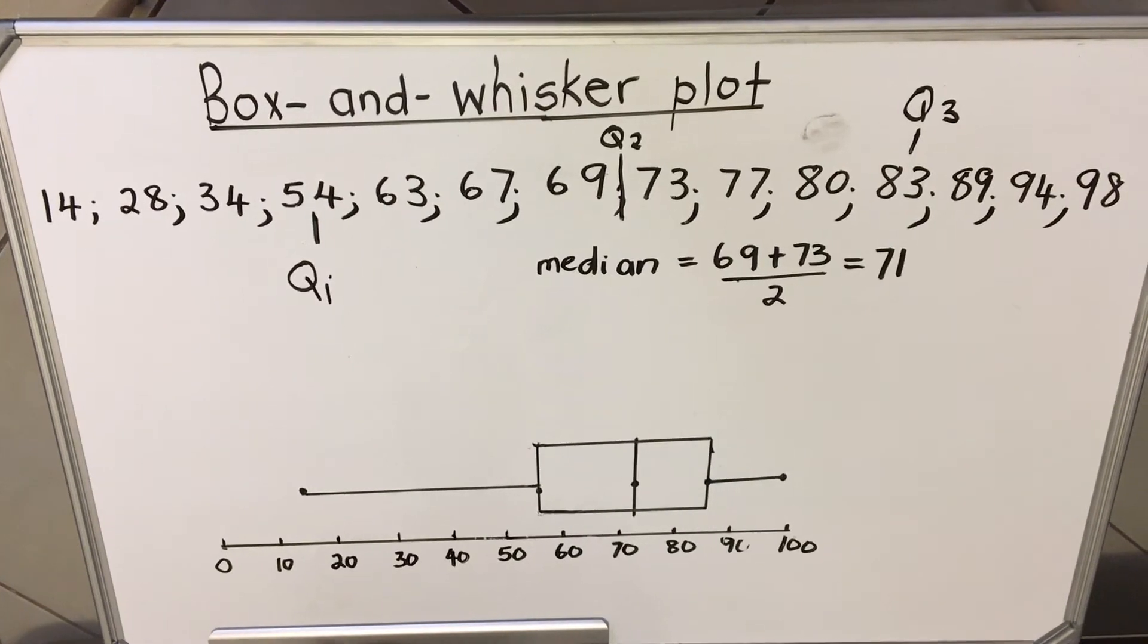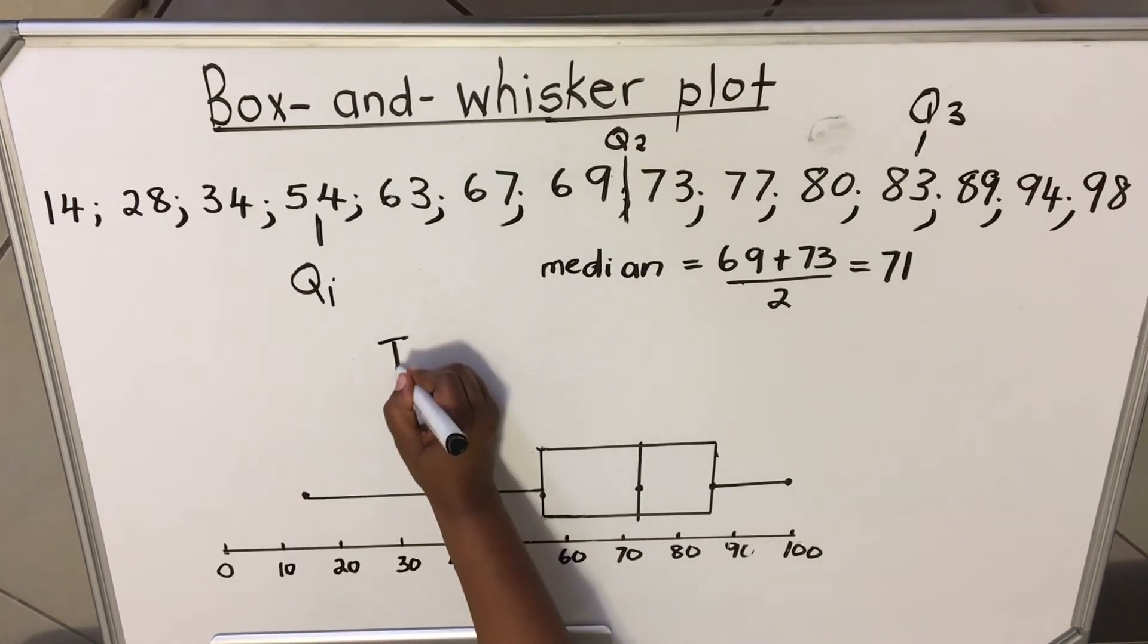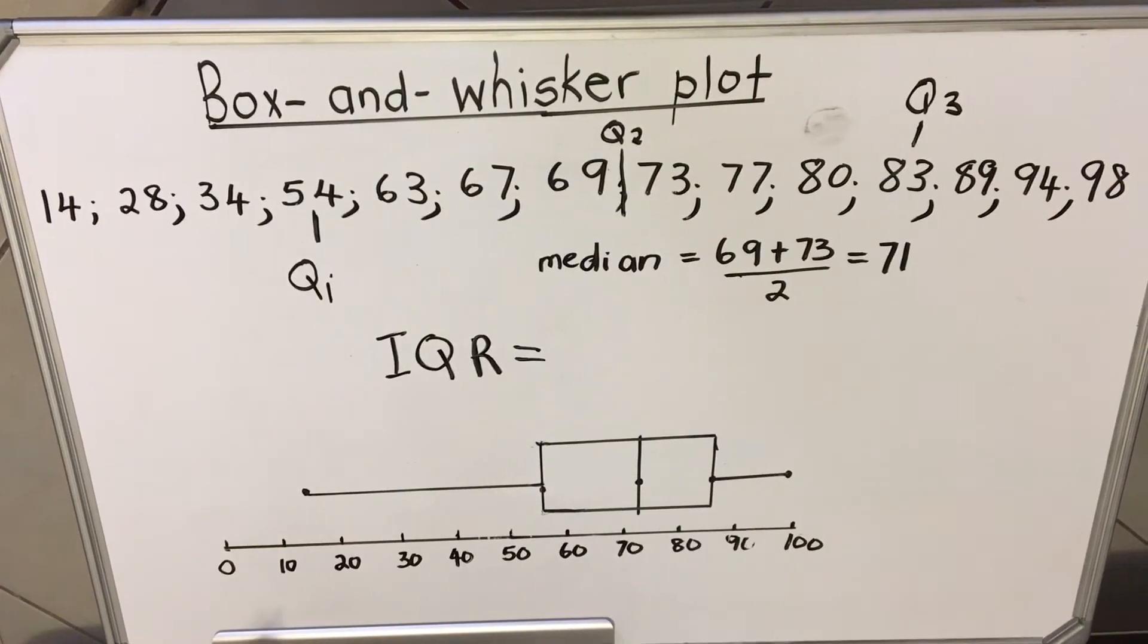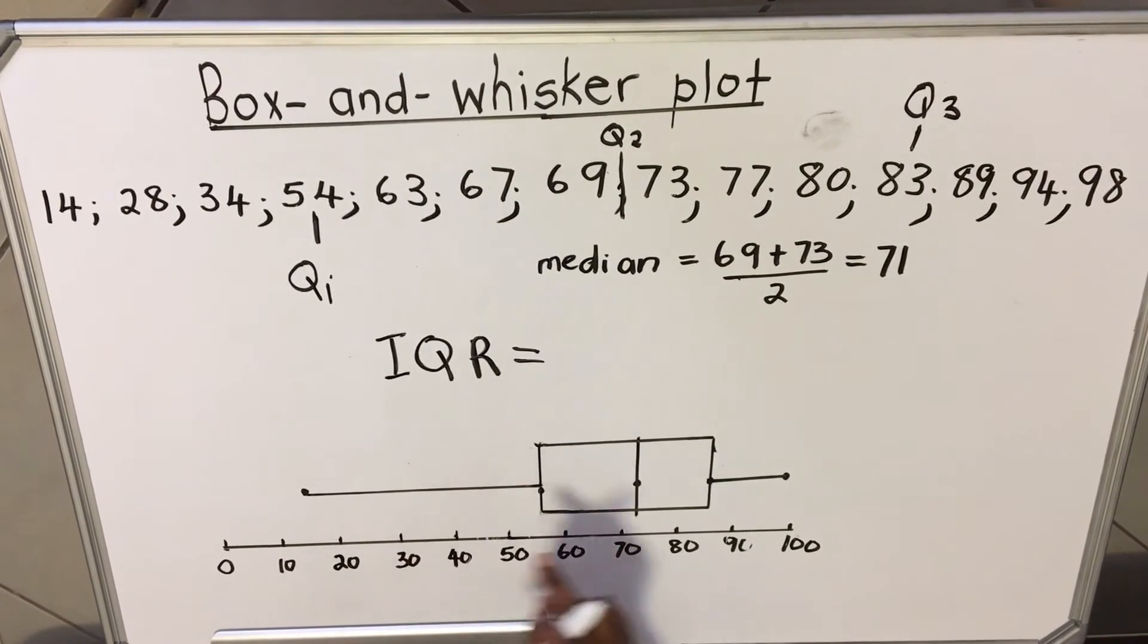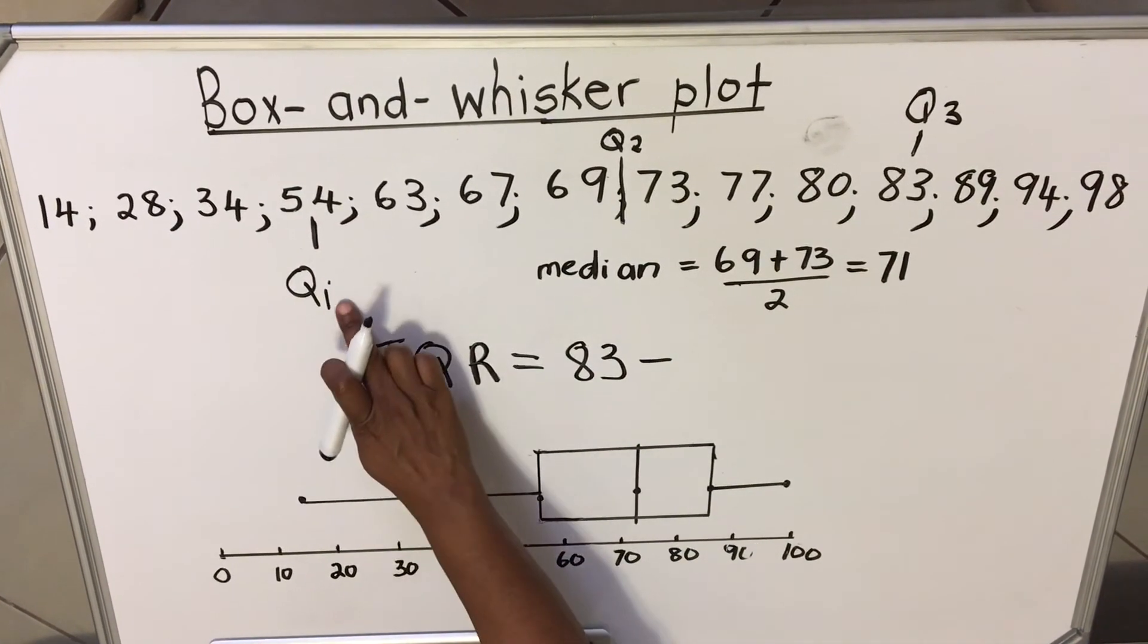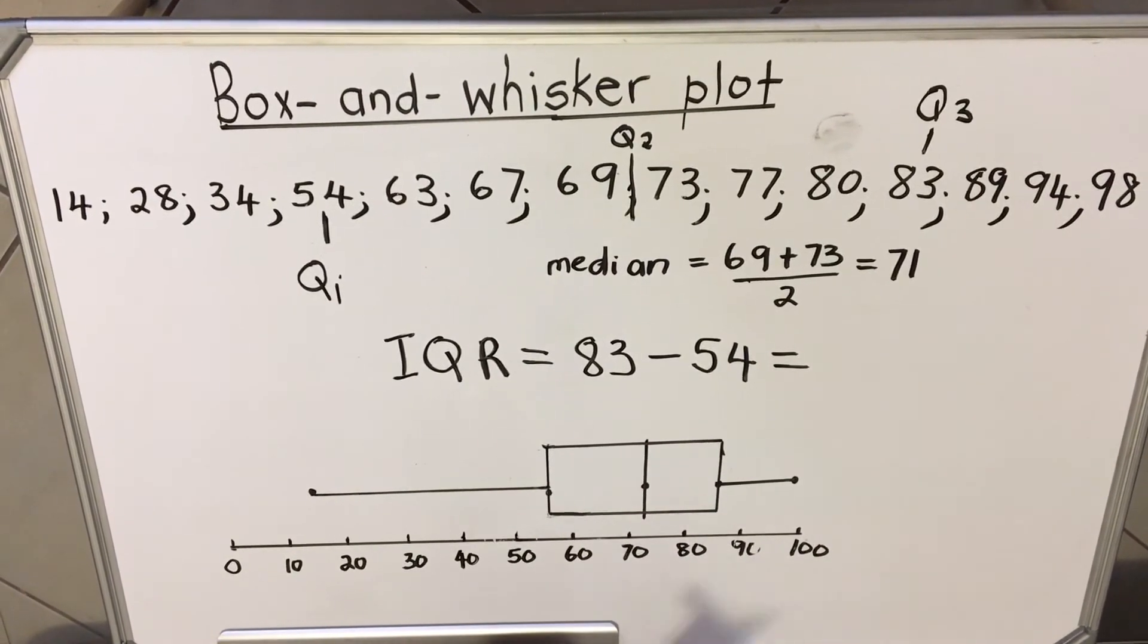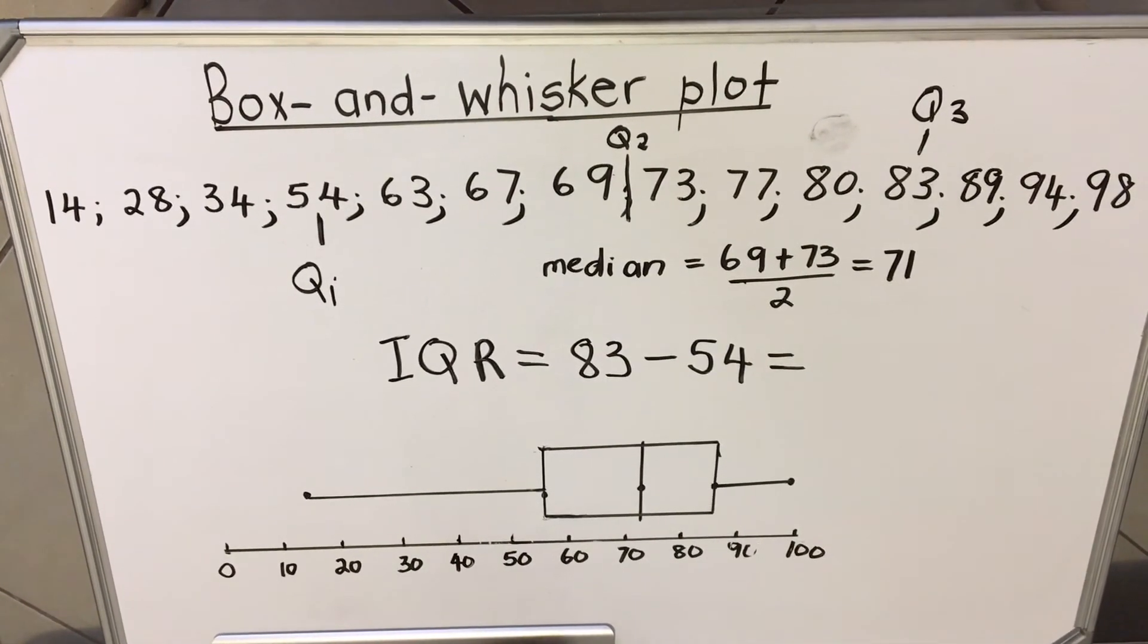Normally you'll get questions where they ask you what's the lowest value, what's the highest value. And another question that they like to ask is the inter-quartile range. You remember in lower grades you did the range. The range was the highest value minus the lowest value. The inter-quartile range - you are talking about the quarters now. So the highest quarter is Q3, which is 83, minus the lowest quarter, which is Q1, minus 54. Then you punch that in your calculator and you get your answer. You'll get these values from the box-and-whisker. That's your Q3 and that's your Q1. So you get that it's 83 minus 54, which is 29.